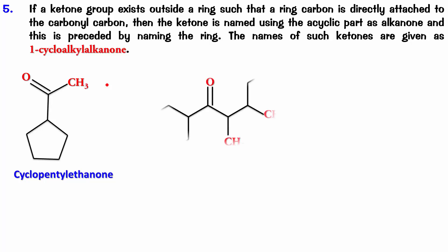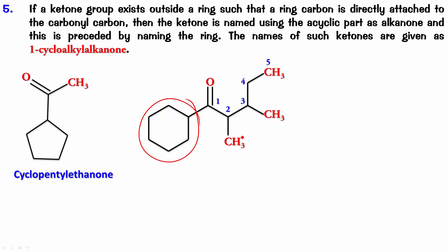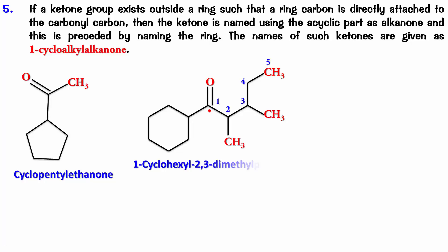Try this example — pause, name it, and check the answer. Obviously this is carbon 1, and numbering gives 1, 2, 3, 4. So we have 1-cyclohexyl, 2,3-dimethylpentanone.